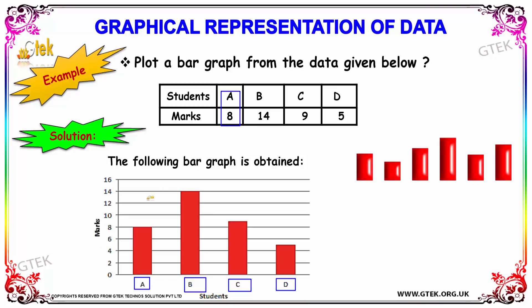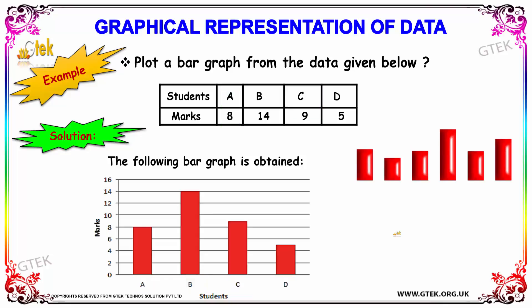So A got 8, indicated here. B got 14, as indicated. C got 9, indicated here. And D got 5. This is how the bar graph will be plotted.